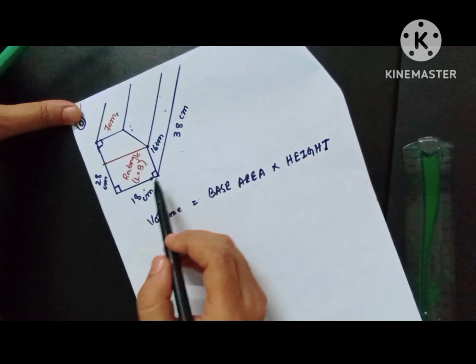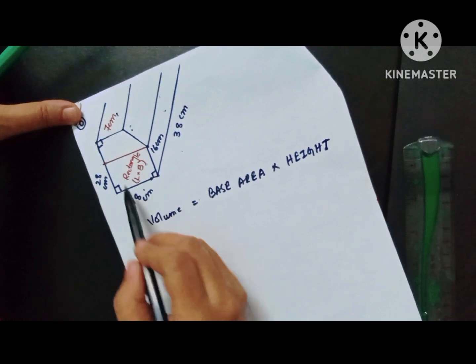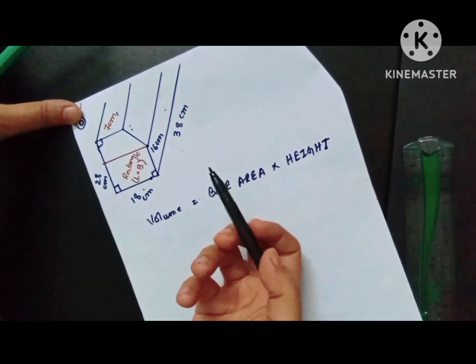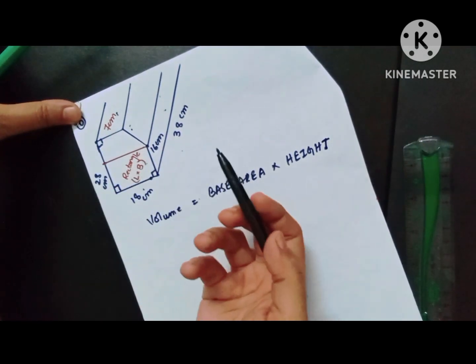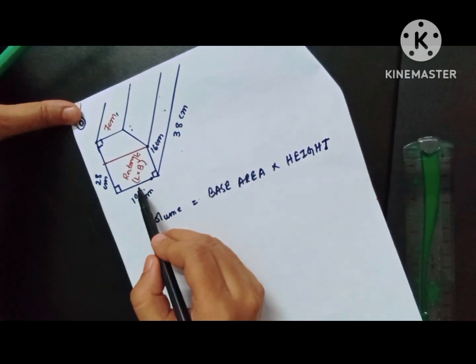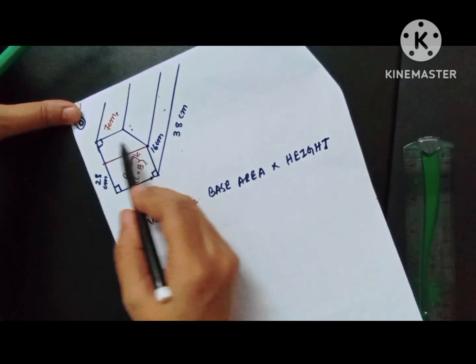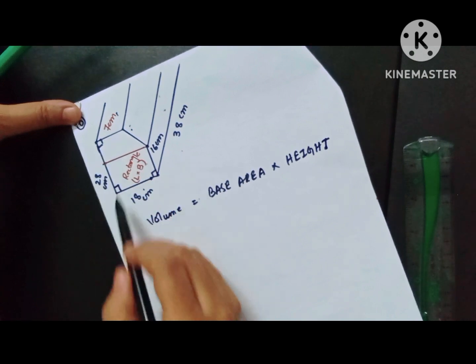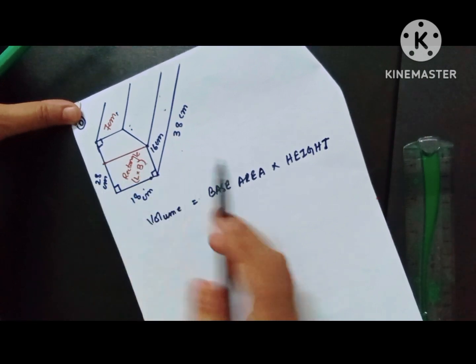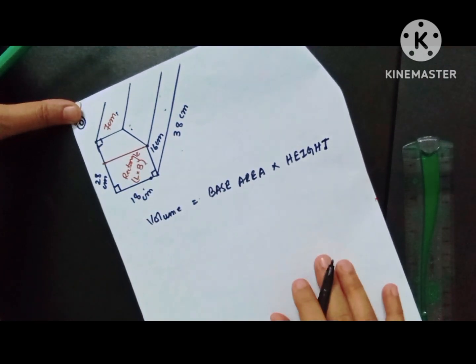Let's see the dimensions of the prism — the two-dimensional face of the prism. Counting the sides: one, two, three, four, five. How many sides are there? Five sides. So obviously what you have is a pentagon.